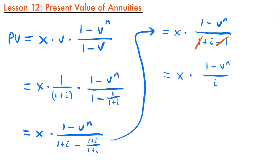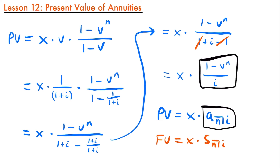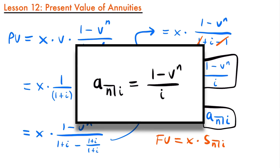Typically, the present value of an annuity is written as x times a-angle-n at interest rate i, where a-angle-n-i represents the expression 1 minus v to the power of n divided by i. This is analogous to the future value notation x times s-angle-n-i, but we use an 'a' instead of an 's'. If you have a payment of one dollar per period, a-angle-n-i gives the present value directly; for any other payment amount, you multiply by that payment x.